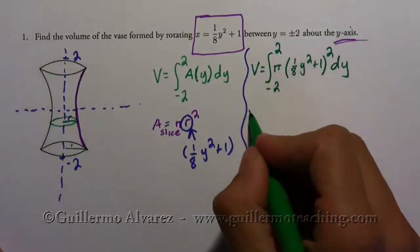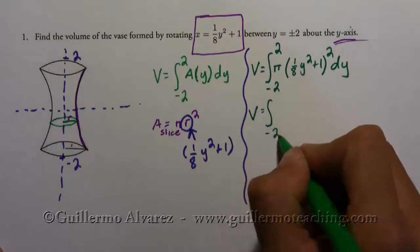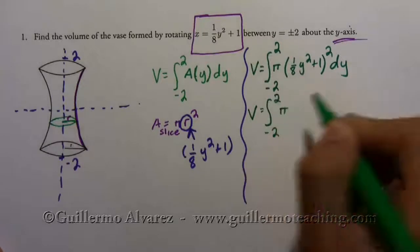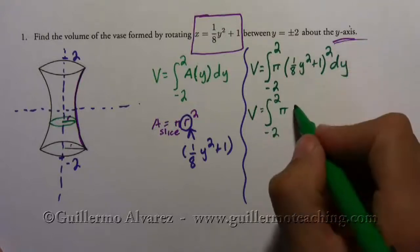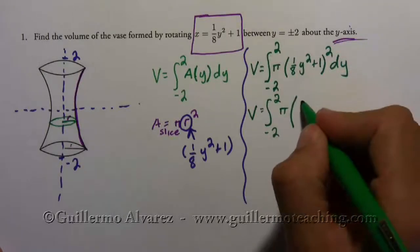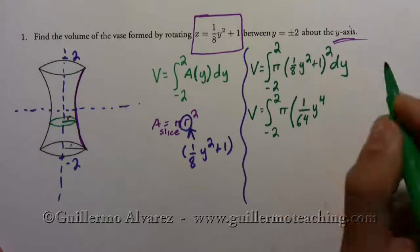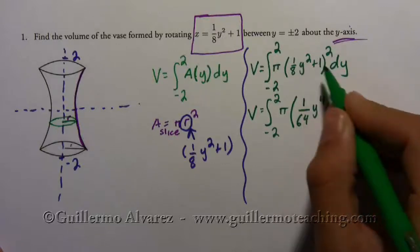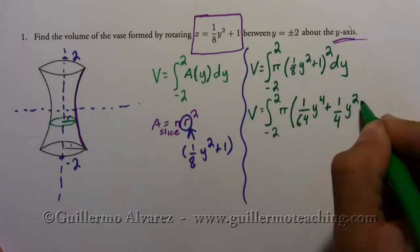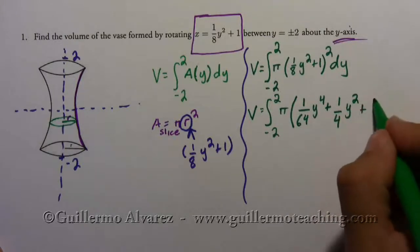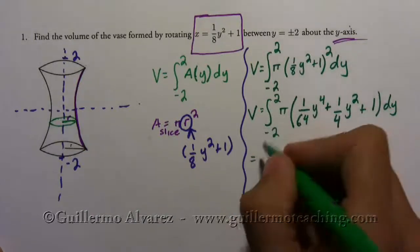Okay, so now let's expand it to make it easier to see what the integral is. So this is going to be one over sixty-four y to the fourth, plus one fourth y squared plus one dy. Okay, let me take the pi outside actually.